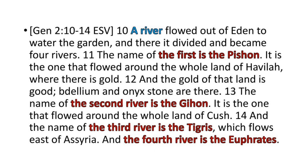Genesis 2:10 through 14 — this is where it states: a river, singular, flowed out of Eden, the city of Eden, to water the garden inside of the city, and there it divided and became four rivers.